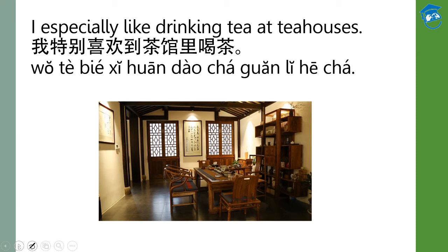And 别, as you have learned, can mean 'no', but in this case it has the meaning of 'different'. So 特别 means special — different from the others. And then 到 means go to somewhere. Then 茶馆: 茶 is tea, and 馆, as you learned before, is used in restaurant 餐馆. 馆 is a word related to places — like embassy or other hospitality buildings. Tea houses are hospitality locations, so that's why we use 茶馆. 里 means in, and 喝茶 is drinking tea.